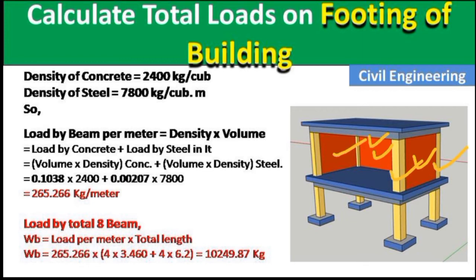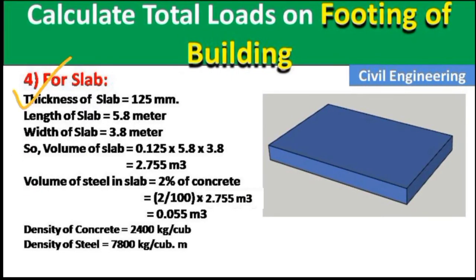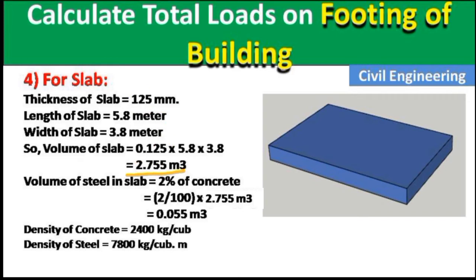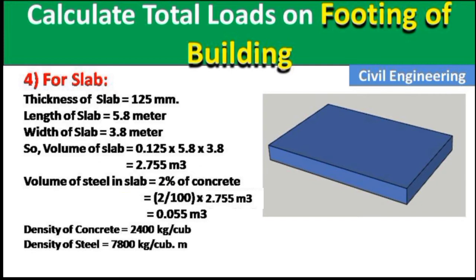Now calculating the load due to the slab. Thickness of slab = 125 mm, length = 5.8 m, width = 3.8 m. Volume of slab = Length × Width × Height = 5.8 × 3.8 × 0.125 = 2.755 m³. Volume of steel = 2% of concrete volume = 0.055 m³.